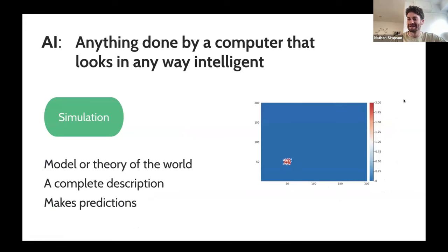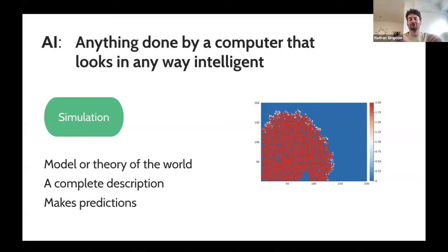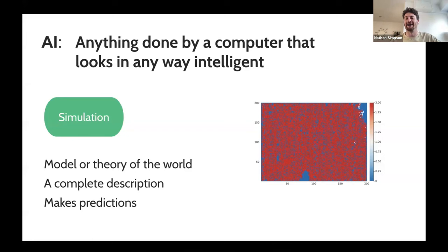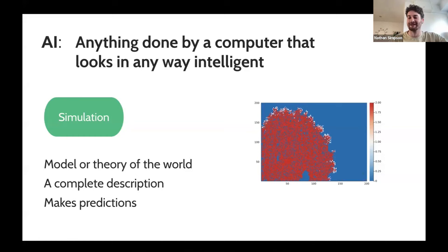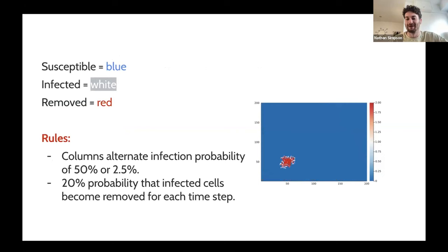The first one is simulation. We have this cool little graph on the right — I think this is actually an implementation of the SIR model, if I'm not mistaken. So you write down a set of rules, and you just kind of hit go. What happens is your state of the world evolves over time in what appears to be some intelligent way. This is a kind of artificial intelligence because it's an automated, evolving state that's like a complete description of some theory of some world you imagine. It makes predictions — you can use this to inform clinical practice.